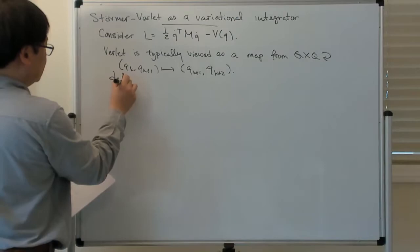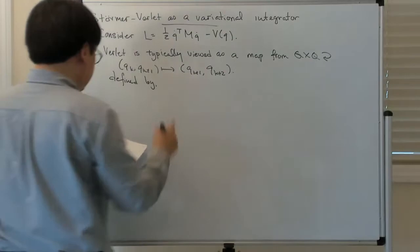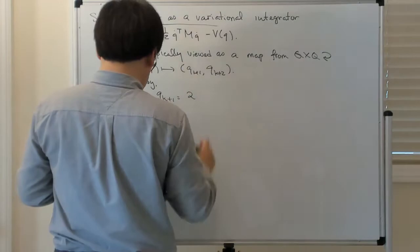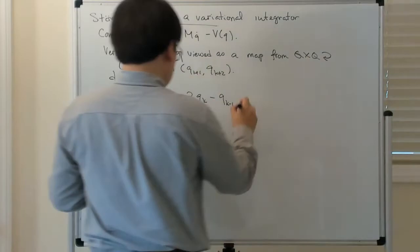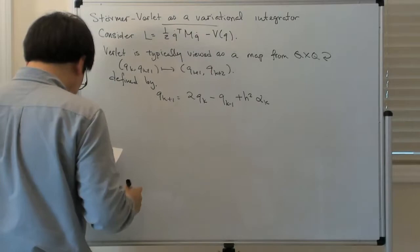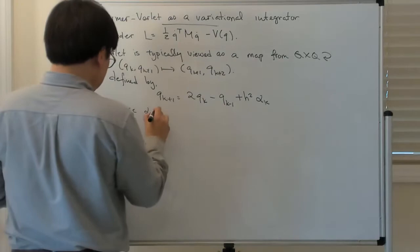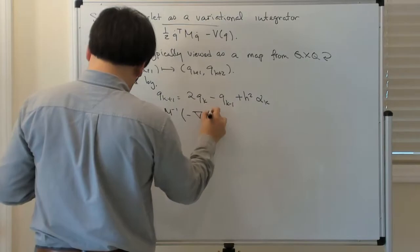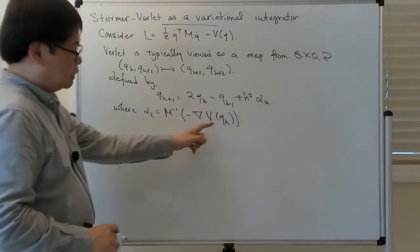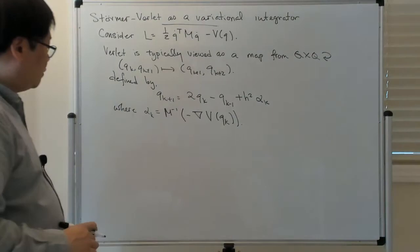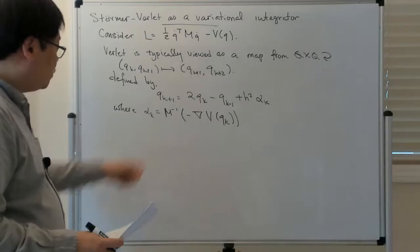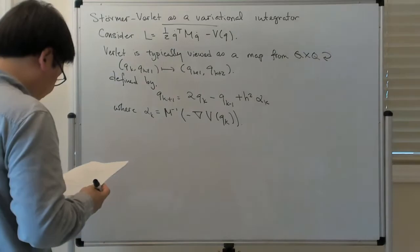It is defined by the following three-term recurrence: Q_{k+1} equals 2Q_k minus Q_{k-1} plus h-squared times alpha_k, where alpha_k is an acceleration-like term equal to M-inverse applied to negative the gradient of the potential at Q_k. This is the external force term — force equals mass times acceleration — so alpha_k is really just the acceleration term.